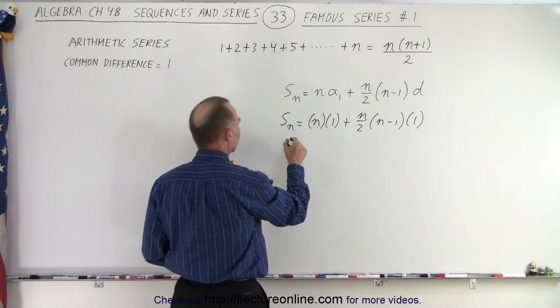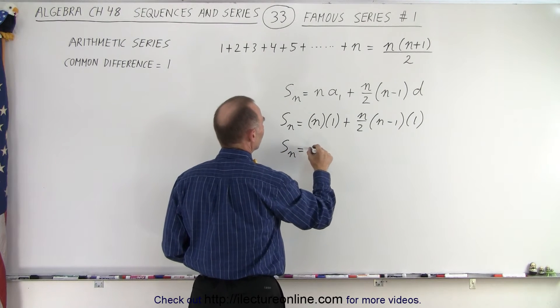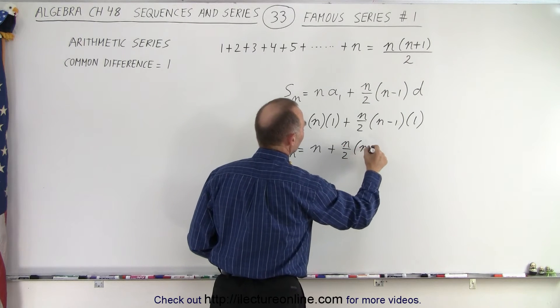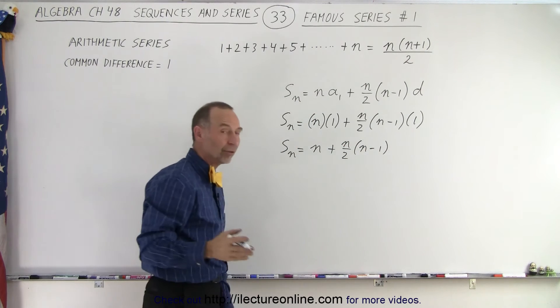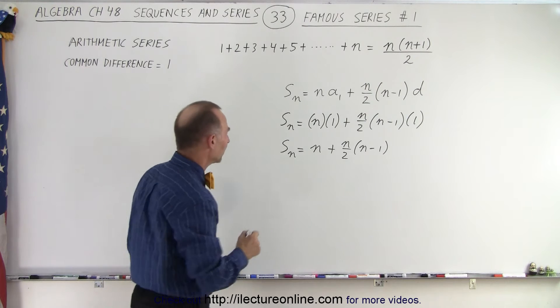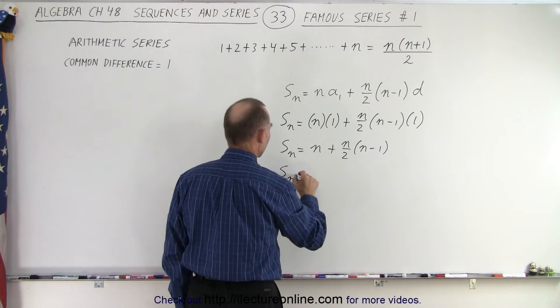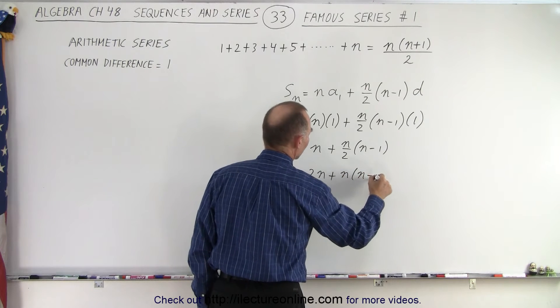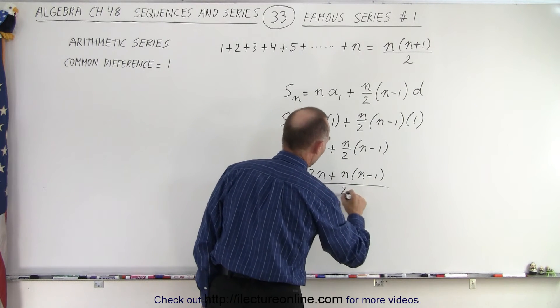So simplifying that, we get sₙ = n + (n/2)(n-1). Now let's put that on a common denominator. So this is sₙ = [2n + n(n-1)] / 2.